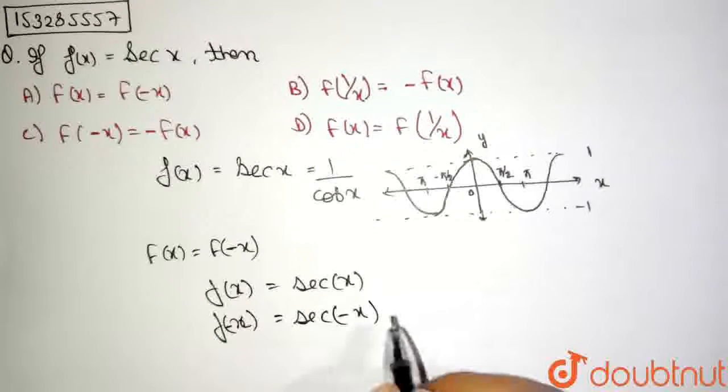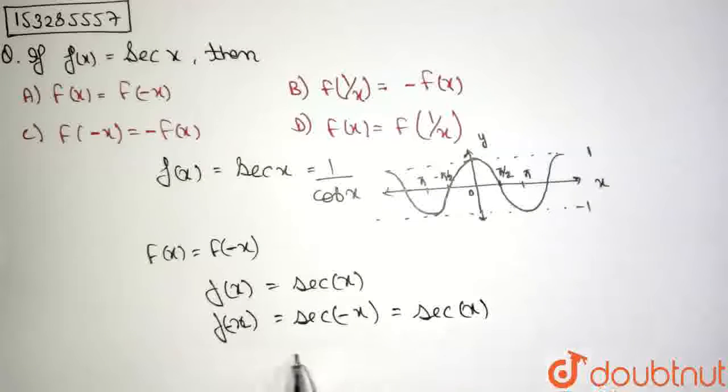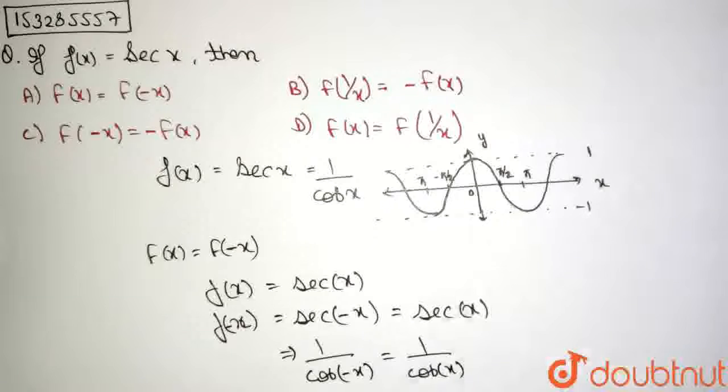And since it is an even function, it is equal to sec of x. Because 1 by cos of minus x is nothing but 1 by cos of x. Because we are assuming this through the graph of cos of x.